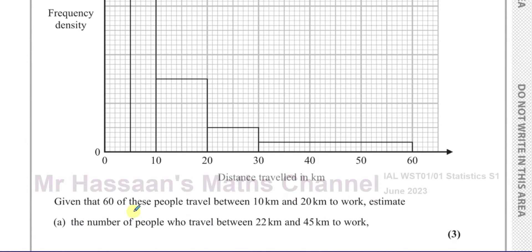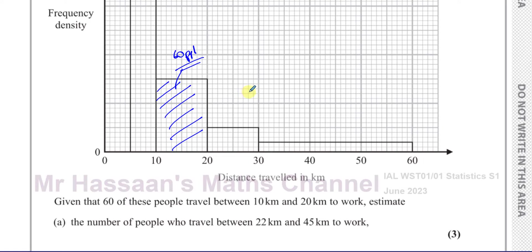We know that in total there are 274 people represented in this histogram. They've told us that 60 of these people travel between 10 and 20 kilometers to work, so that means in this region here there are 60 people being represented. We've got to find — or estimate — the number of people who travel between 22 and 45 kilometers to work.